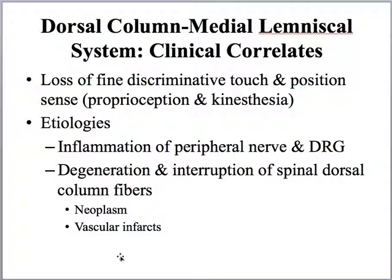In terms of clinical correlates, damage is going to cause loss of fine discrimination, touch, and position sense. The types of etiologies that could cause this include inflammation of peripheral nerves, disruption at the dorsal ganglia, degradation and interruption of the spinal dorsal column, vascular insufficiencies, or a tumor. If the lesion is within the spinal cord, you're going to see the deficit ipsilaterally. If the area is involving the thalamus or somatosensory cortex, the deficit will be contralateral.